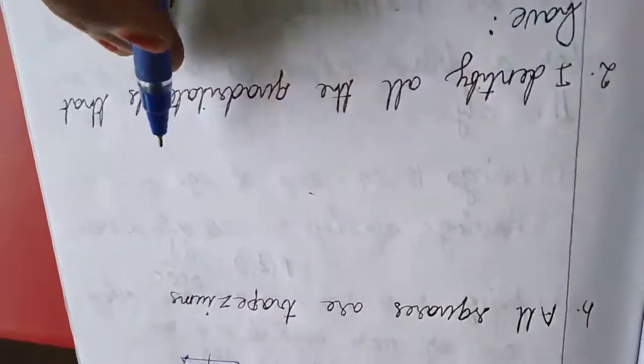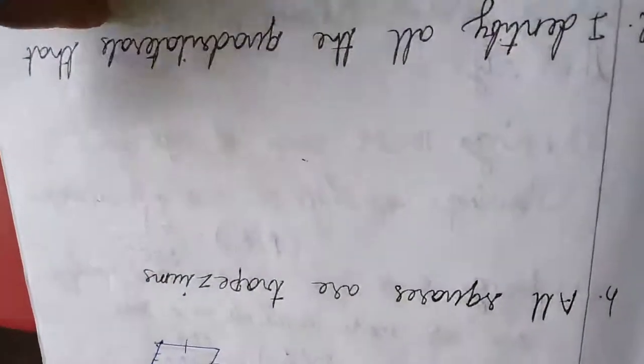Next one, all squares are trapeziums. Squares also have parallel sides, so this is also true.